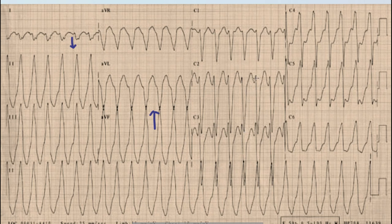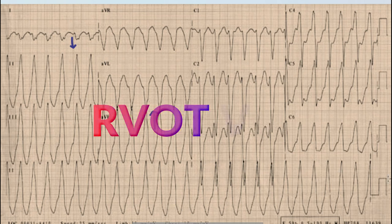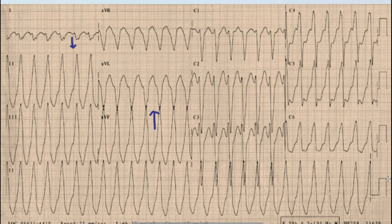Another important point: the transition zone — the precordial lead where the R wave equals the S wave — is V4. Normally in a standard ECG it should be V2 or V3. So whenever you find a ventricular tachycardia with left bundle branch morphology, inferior axis (right axis deviation), and a transition zone after V3, you should always think of a ventricular tachycardia of right ventricular outflow tract origin.